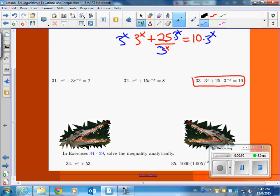So multiplying it through, you get 3 to the x squared plus, actually I'm going to go plus 25, I'm going to move this to the other side, negative 10 times 3 to the x. So there you have it.